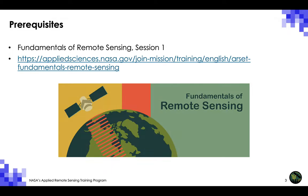A prerequisite for the two-part training is RSET's Fundamentals of Remote Sensing Session 1. This Fundamentals course provides a general overview of remote sensing and its application to disasters, health and air quality, land, water resources, and wildfire management. Those who take the Fundamentals course will become familiar with satellite orbits, satellite types, resolutions, sensors, and processing levels.